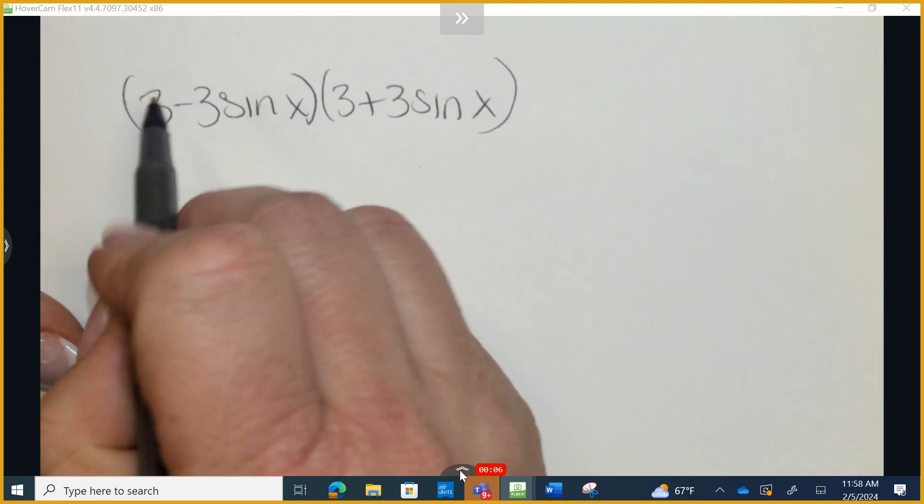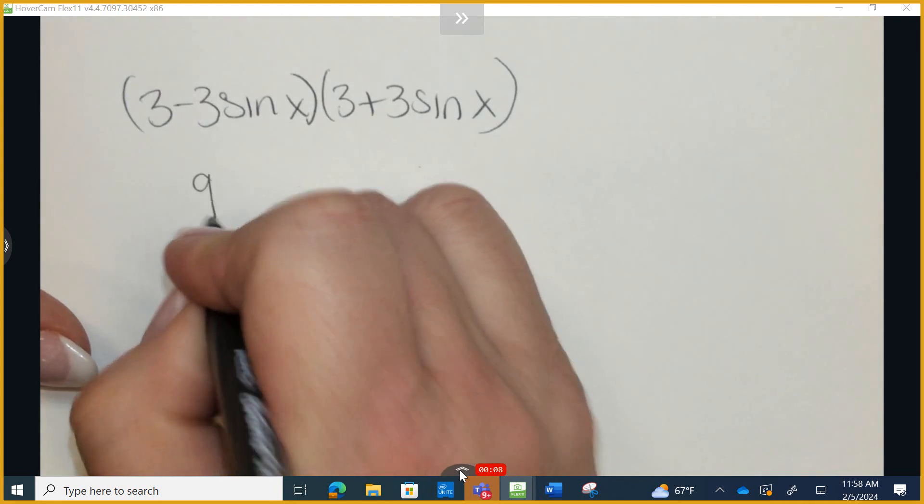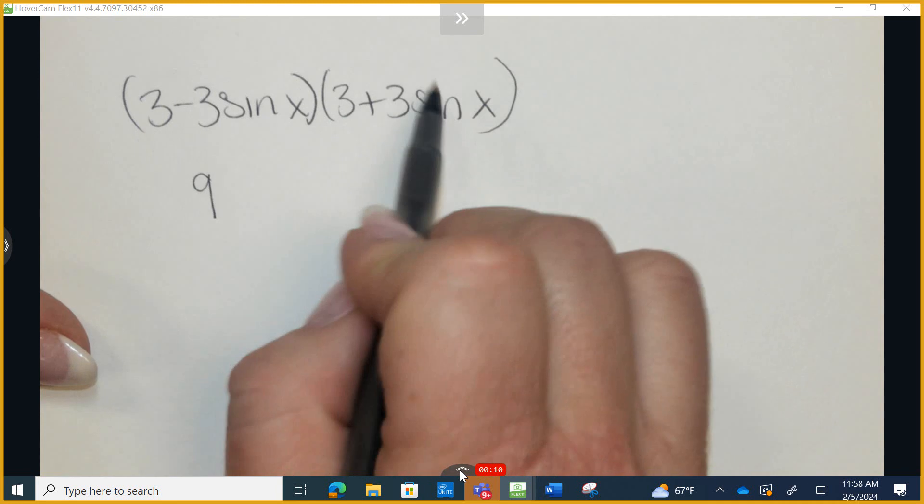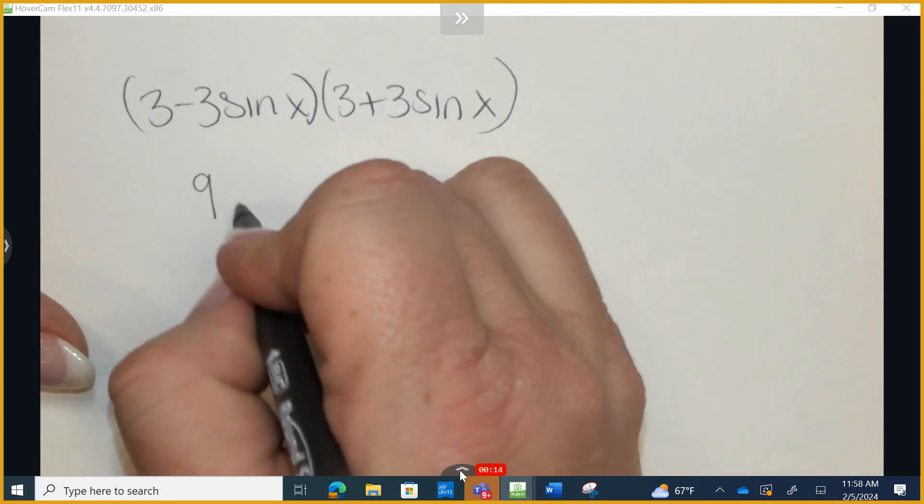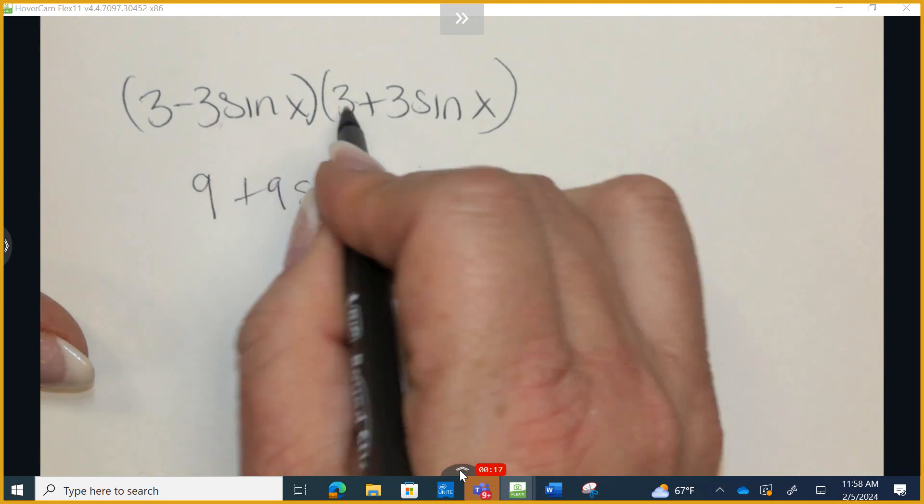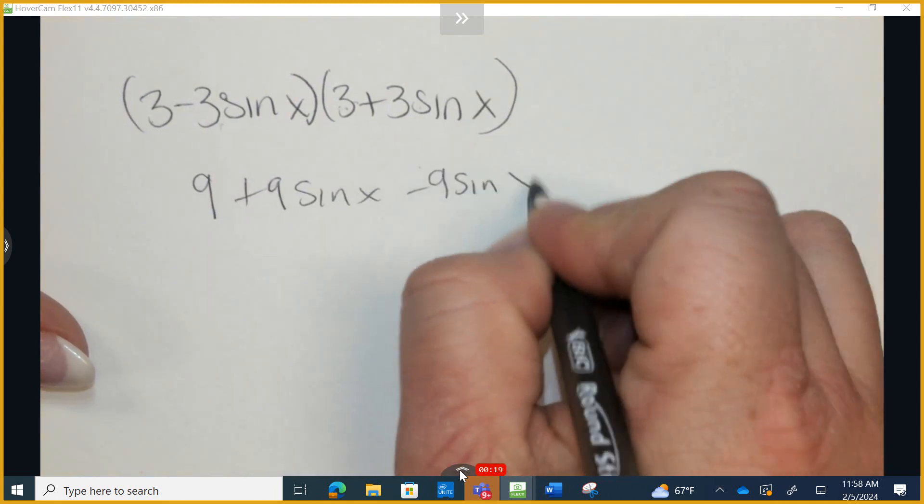So I'm going to go ahead and FOIL this, multiplying the fronts, 9. Notice how the inside and the outside are going to be additive inverses. I'll go ahead and show you. So the outside is a positive 9 sine of x. The inside is a negative 9 sine of x.